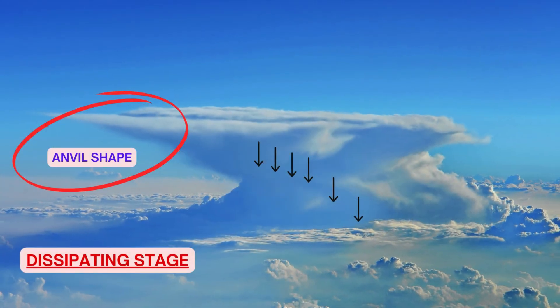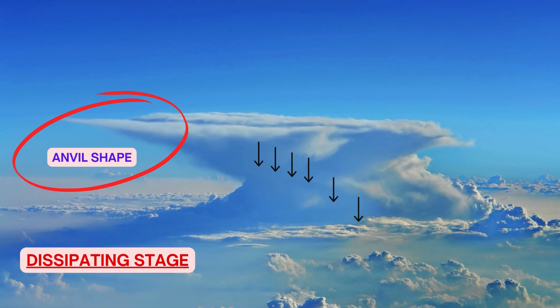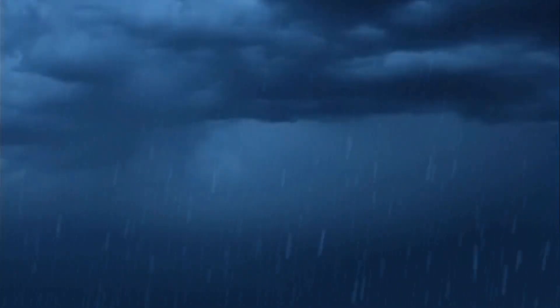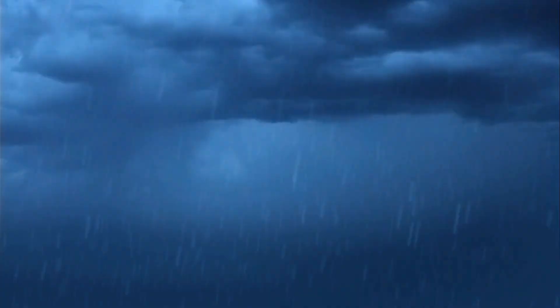The last stage is the dissipating stage, characterized by predominantly downdrafts and no updrafts. Further development of the CB ceases. The top of the cloud spreads out by the upper wind to form the shape of an anvil. At these levels the cloud thins out to form cirrus clouds. The dissipating stage may last about one and a half to two and a half hours. Having seen the life cycle of a thunderstorm, let's now understand why it is considered the most dangerous weather hazard.